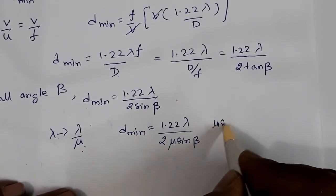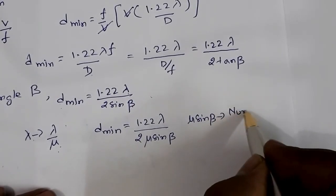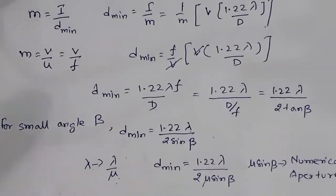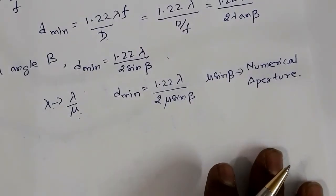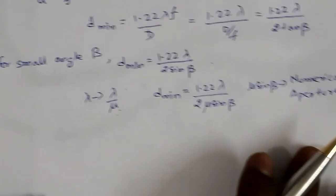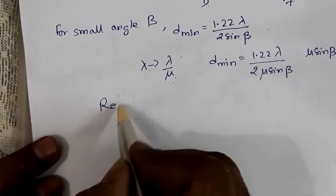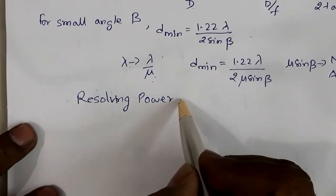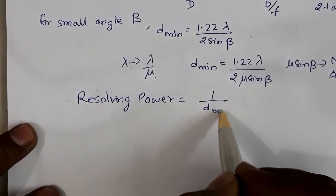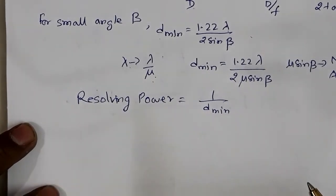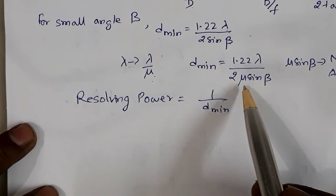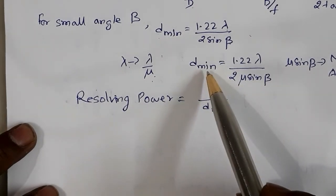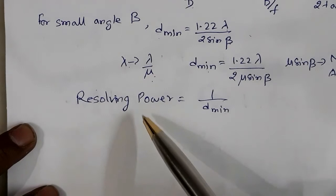The quantity μ sin β is called the numerical aperture. Resolving power is the reciprocal of minimum distance of resolution — smaller the D_minimum, greater the resolving power. By increasing μ, that is by choosing a suitable liquid, you can decrease D_minimum and thereby increase the resolving power of the microscope.